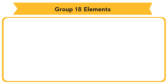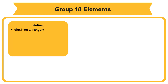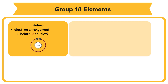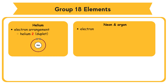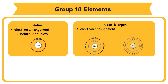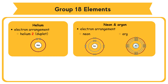The electron arrangement of helium is 2. The helium atom has a duplet electron arrangement. The electron arrangements of neon and argon are 2.8 and 2.8.8 respectively. Neon and argon atoms have an octet electron arrangement.